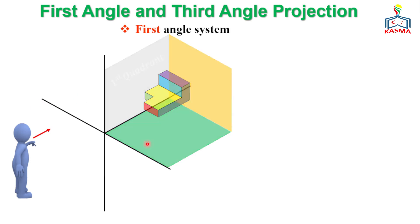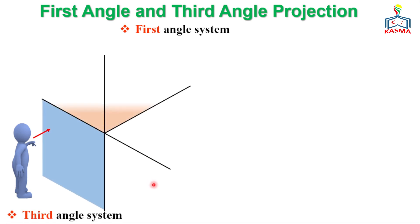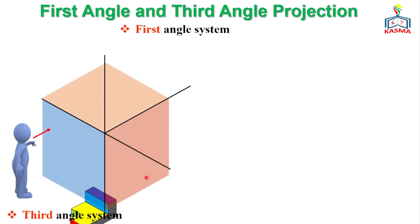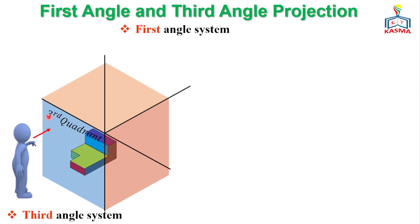When we come to the third angle projection, it is the vice versa — the projection plane is placed between the observer and the object. It is also in the third quadrant. So assume the object is inside this box. If you want to construct the front view, it will be constructed over this plane, meaning the plane is between the object and the observer.